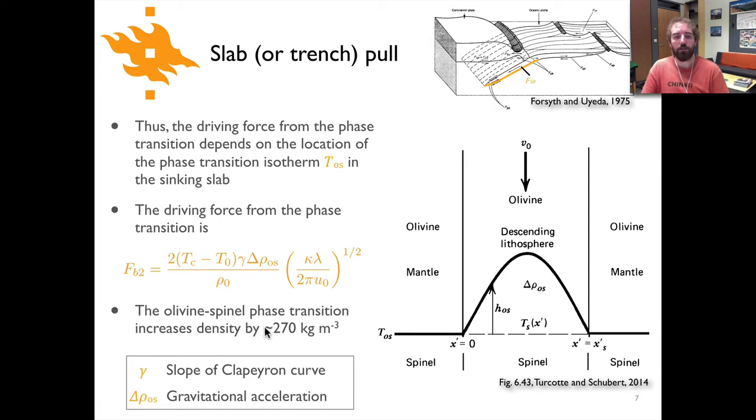The size of the phase transition density difference is about 270 kilograms per cubic meter. It's actually relatively big, and that's the reason that this force is significant in terms of the slab pull.